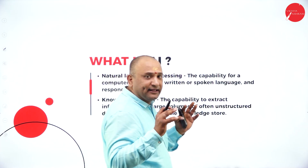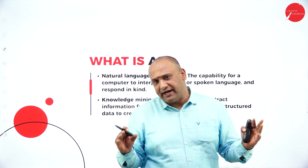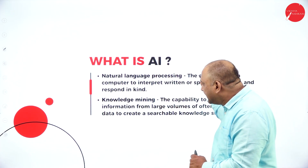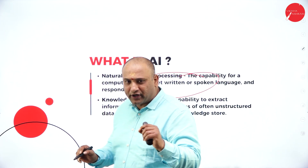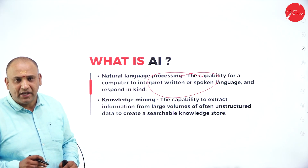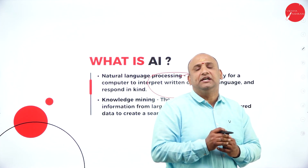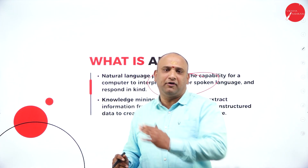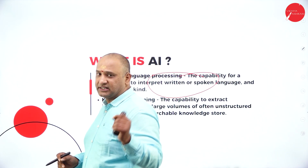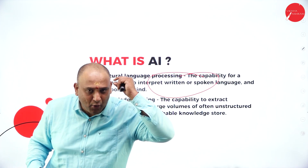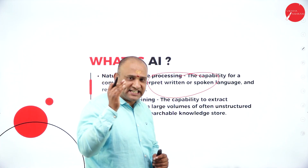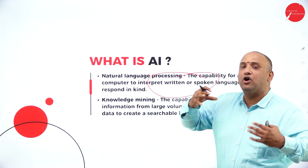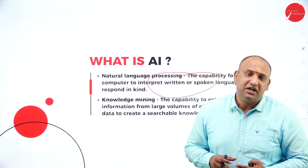What is AI? This is the question running across millions of minds. AI is basically on two parts. One is natural language processing — the capability of a computer to interpret written or spoken language and respond. In India there are thousands of languages, and across the globe there are hundreds more. We want the computer to understand the same language, rhythm, and diction, and that's exactly where natural language processing comes into picture.